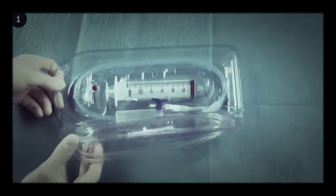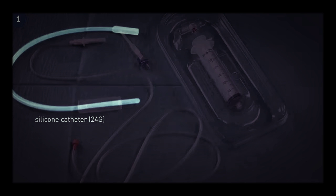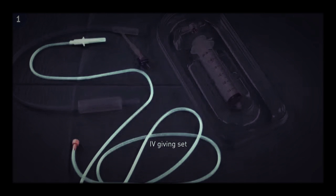The Bakri balloon consists of a silicon balloon connected to a 24 French silicon catheter, an IV giving set, and lastly a syringe.